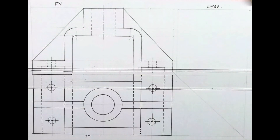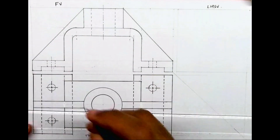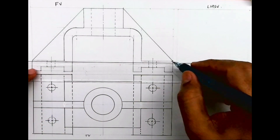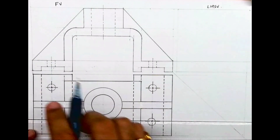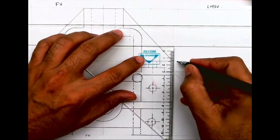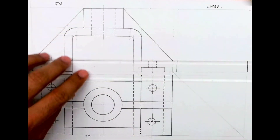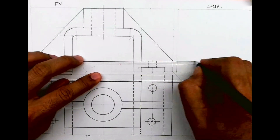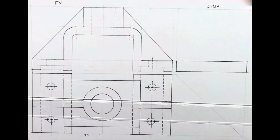Welcome to technical drawing. Today we'll solve this problem — front view and top view are given, and we need to draw the left-hand side view. I'm taking height from the front view and width from the top view, so we get the first part.